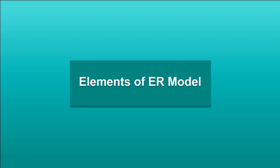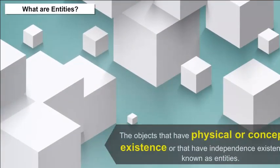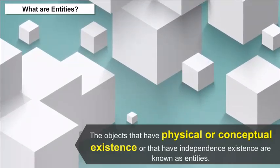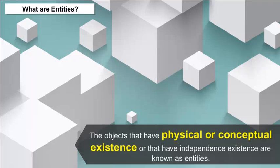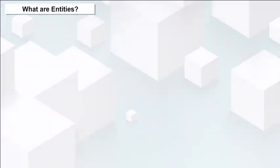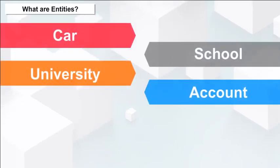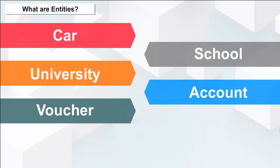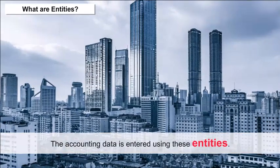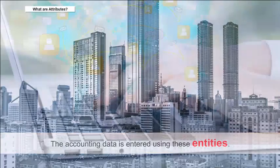Elements of ER Model — What are entities? The objects that have physical or conceptual existence, or that have independent existence, are known as entities. For example, car, school, university, account, voucher, company, job, etc. The accounting data is entered using these entities.